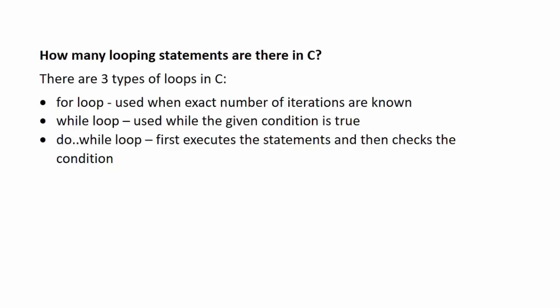Next question: how many looping statements are there in C? There are three types of loops in C: for loop, while loop, and do-while loop. For loop is used when the exact number of iterations are known. For example, suppose we have to print the names of five students — we will execute the statement five times. Since we exactly know we want to execute the statement five times, we will use the for loop.